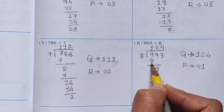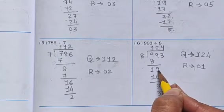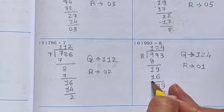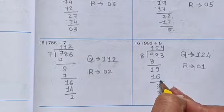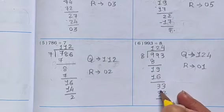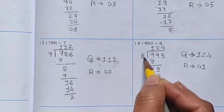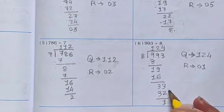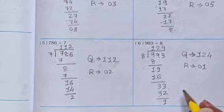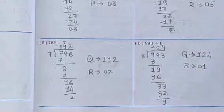Now three digit number divided by eight. Eight ones are eight. Nine minus eight is one, bring down the nine — nineteen. Eight twos are sixteen. Nineteen minus sixteen: nine minus six is three. Bring down three — thirty three. Eight fours are thirty two. Thirty three minus thirty two: three minus two is one. The remainder is one and the answer is one hundred twenty four.